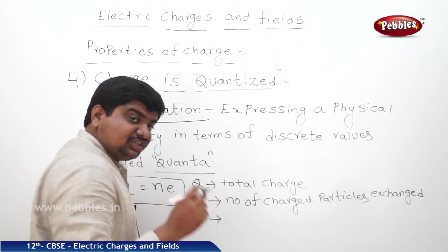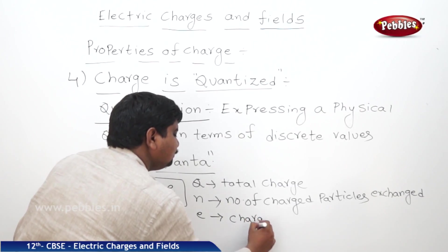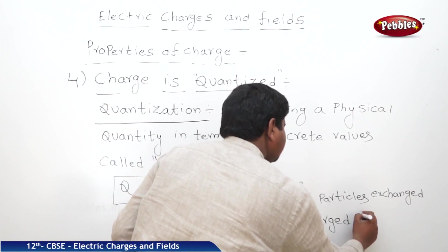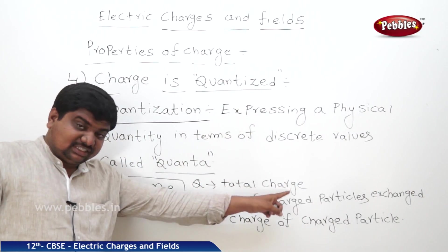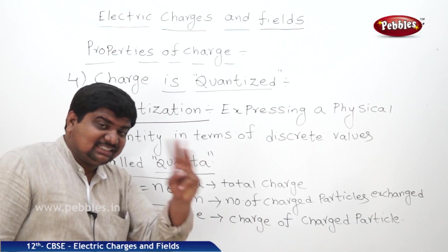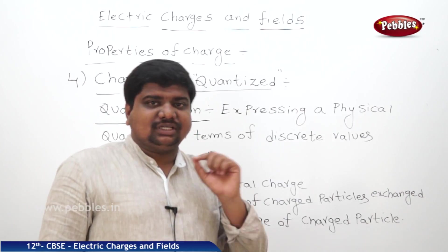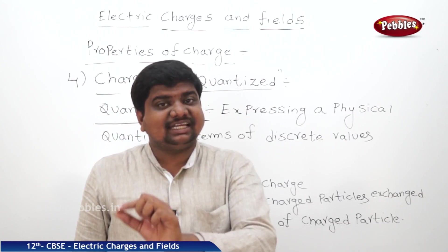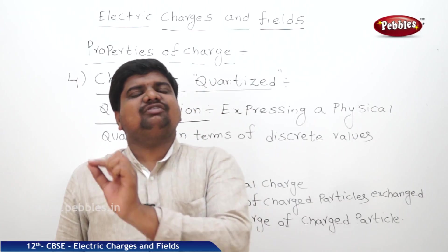What is E? Charge of individual charged particles — the charge of electron or proton. Going back to the fundamental particles: proton, electron, neutron. What is the charge of proton? Positive, with a value of 1.6 × 10⁻¹⁹ coulombs. What about electron? It is negatively charged, same value: 1.6 × 10⁻¹⁹ coulombs.